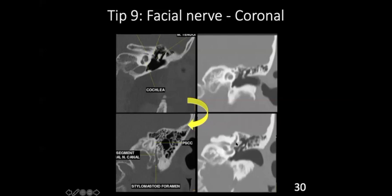In the coronal section at the mesotympanum level, look at the ossicles and the lateral attic wall. You can imagine the cochlea as a swan — the basal turn is the body, the falciform process is there, this is the head, this is the beak, and this is the horn of the swan. The beak of the swan is the lateral semicircular canal. Below the lateral semicircular canal, you see the translucent structure — that is the facial nerve, medial to the ossicular chain. Then the vertical part of the facial nerve is more or less at the same level as the posterior semicircular canal, which is vertically oriented.